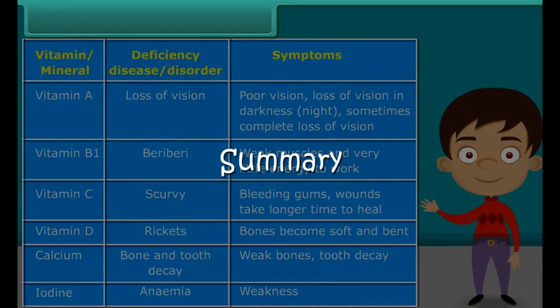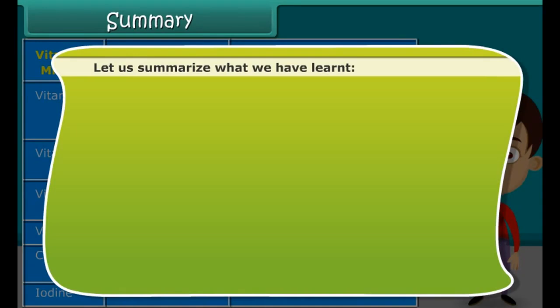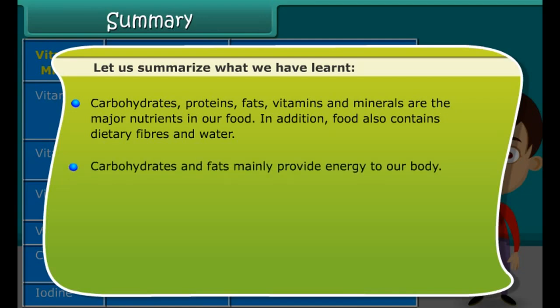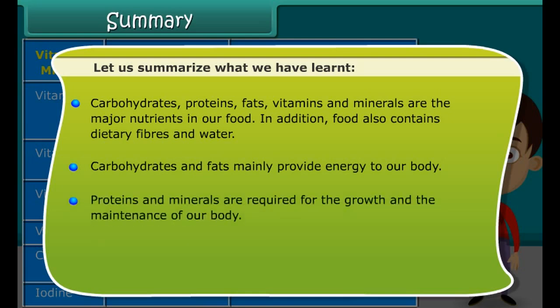Let us summarize what we have learned. Carbohydrates, proteins, fats, vitamins and minerals are the major nutrients in our food. In addition, food also contains dietary fibers and water. Carbohydrates and fats mainly provide energy to our body; proteins and minerals are required for the growth and the maintenance of our body.